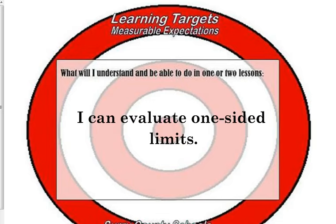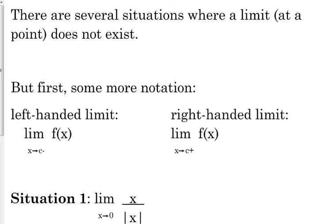What the heck is a one-sided limit, and why do we need one-sided limits? We've already seen a few situations where limits at a point do not exist, but let's talk about some more notation. We've got what we call a left-handed limit and a right-handed limit. You'll notice that beside the number we are approaching, there's a little negative — that's not a typo. The negative is not supposed to be in front of the number; it's talking about approaching it from the left.